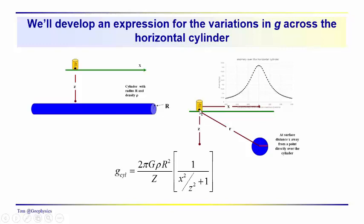R is the distance from the gravimeter to the center of the cylinder, and Z is the depth. We should have a V here because this is the vertical component. The first term is the maximum value of the acceleration due to gravity, and then the shape of the anomaly is described by the second term.